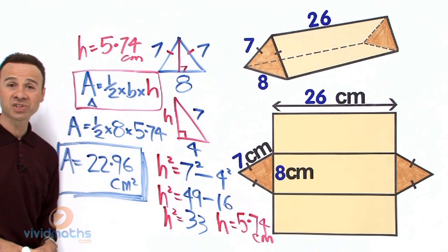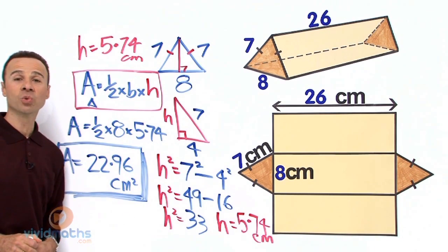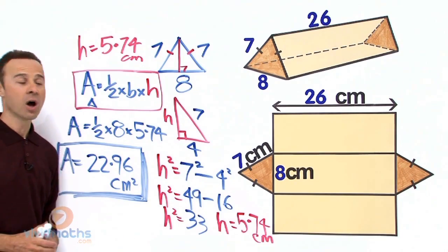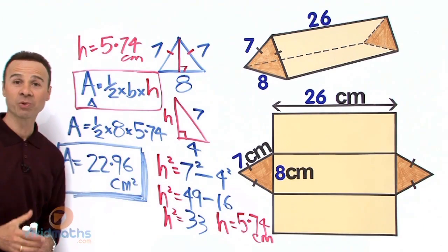That concludes part 1. Stay tuned for part 2. We are going to work out the complete total and entire surface area of this triangular prism. So stay tuned, we will be right back.